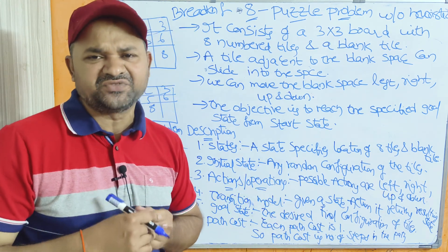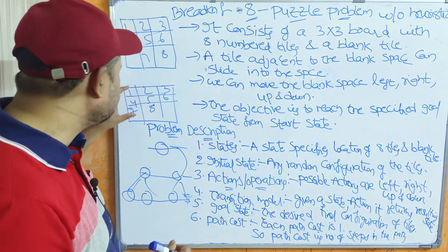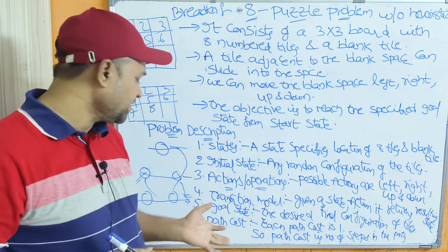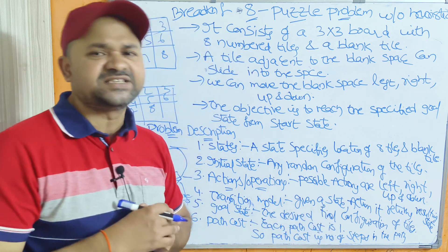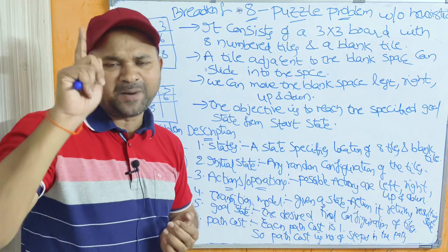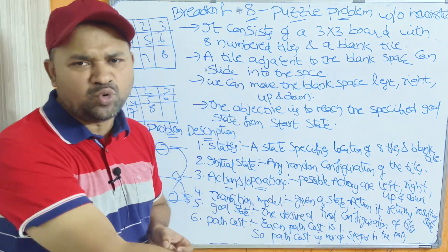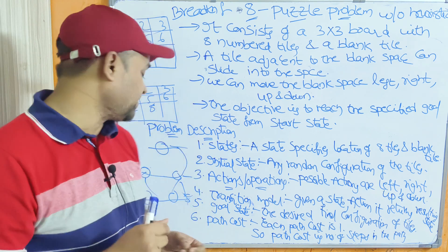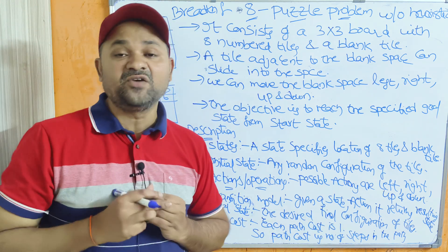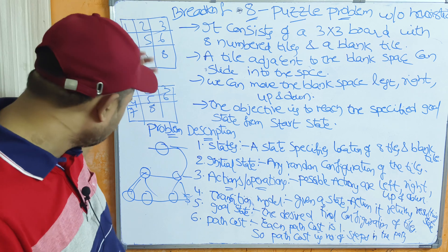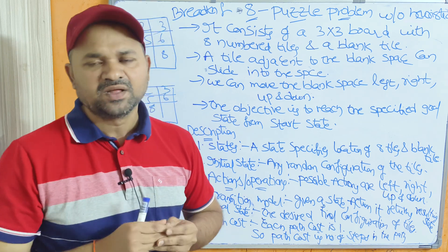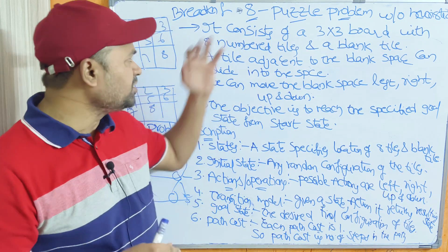The desired final configuration of the tiles is called the goal state. In this problem, this is our goal state and we have to produce it from the initial state. For path cost: each move has a cost of 1. If we apply any move, we get one new state with path cost 1. The path cost is nothing but the number of steps involved in the path. For example, if we need 3 moves to produce the goal state, the path cost is 3.